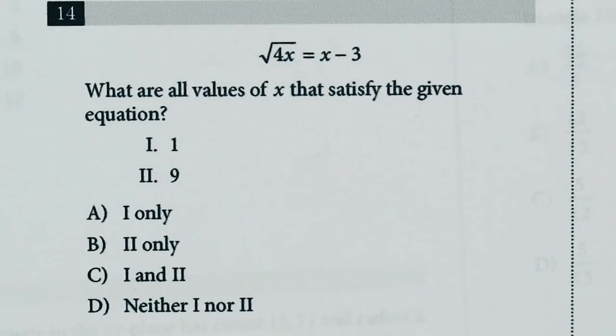The other one that I got wrong was question 14. The square root of 4x is equal to x minus 3. What are all values of x that satisfy the given equation? Is it one or is it nine or is it both or neither?